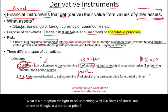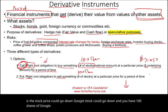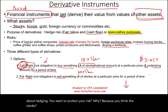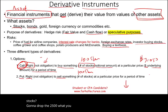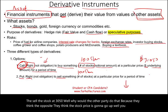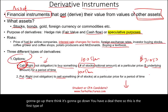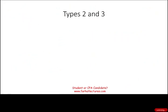A put option gives you the right to sell something — for example, 100 shares of Google at $3,050. If you already own the stock and fear the price could drop to $2,500, you buy a put option giving you the right to sell at $3,050. The other party agrees because they think the price will go up. Both sides see the deal differently, which is why they can agree on the contract.